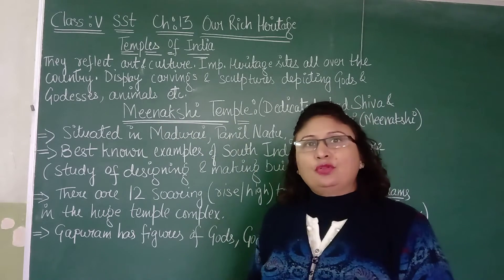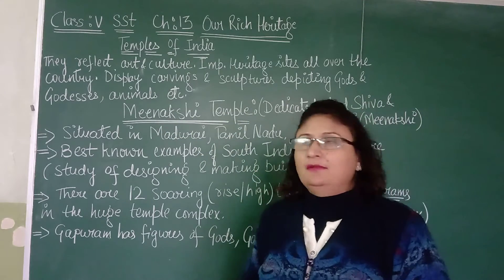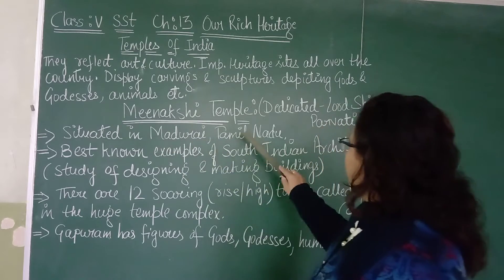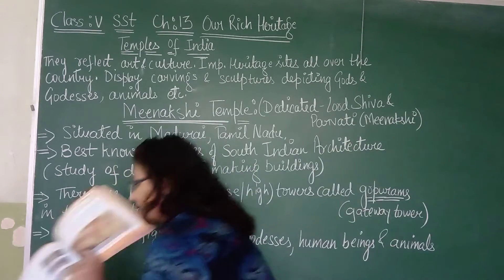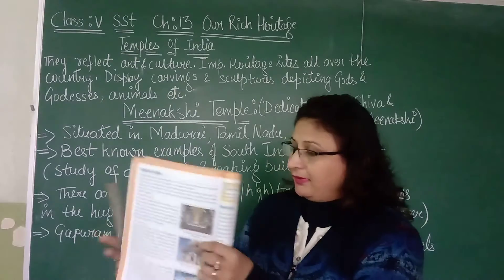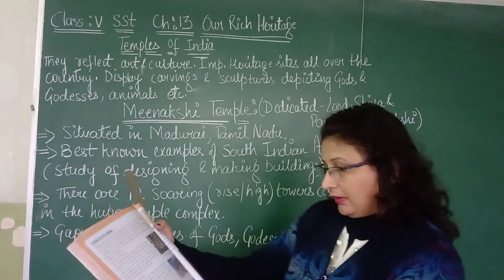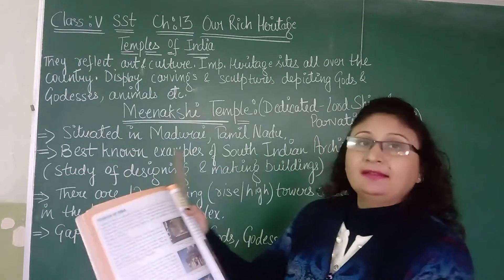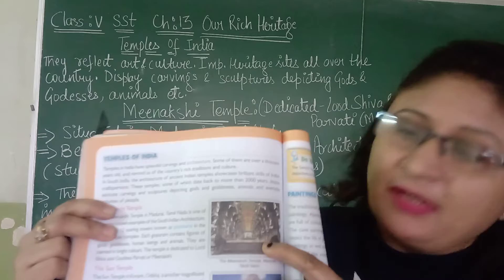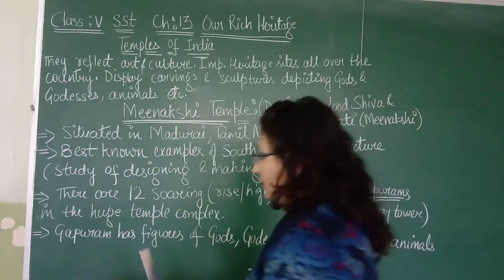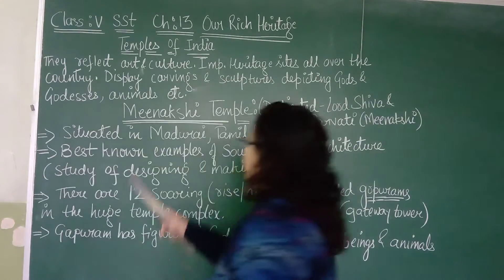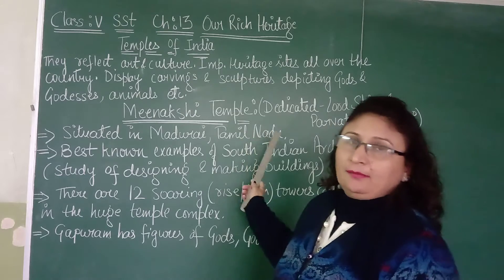It is dedicated to Lord Shiva. It is situated in Madurai, Tamil Nadu. As you can see, this is the picture of Meenakshi temple on page number 132. This is the photograph of Meenakshi temple. You can see it in your book. It is in Madurai, Tamil Nadu.